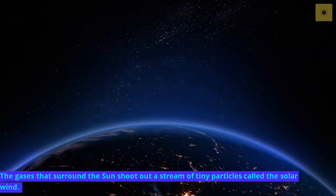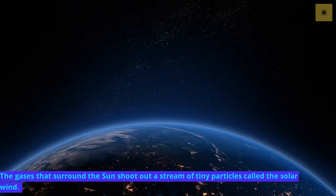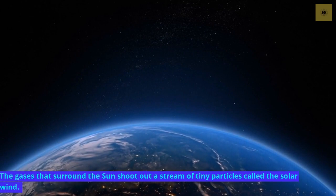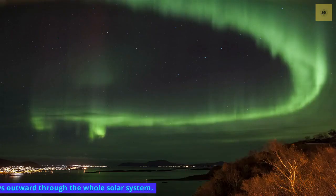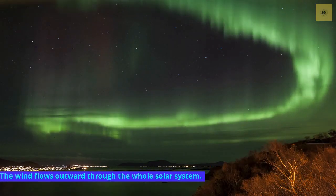The gases that surround the Sun shoot out a stream of tiny particles called the solar wind. The wind flows outward through the whole solar system.